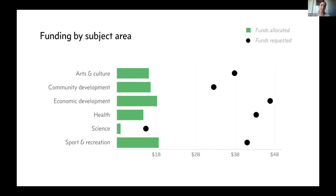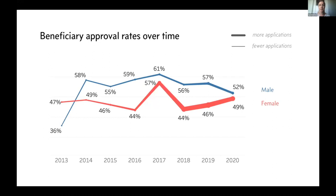We can slice that data by grant maker type, and we can play that data back to individual grant makers so they can see where their money's going. We can also look at approval rates — which grants are more or less likely to be successful based on beneficiary group. It seems that funding directed towards women is still less likely to be approved than funding directed towards men, which seems completely backwards. These statistics can hopefully drive action around inclusion and equity.